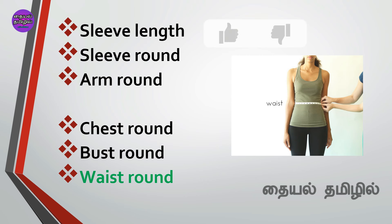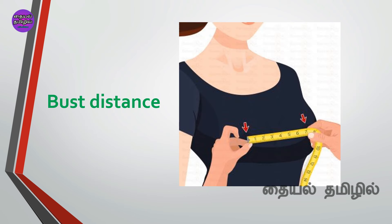This is the waist round. This is the waist length. This is the waist round measurement. The waist round is the waist round measurement. This is the bust distance. If you use the princess line in the top position, this is the bust distance.